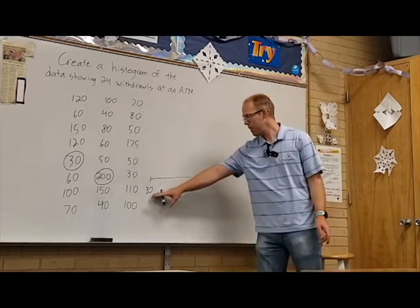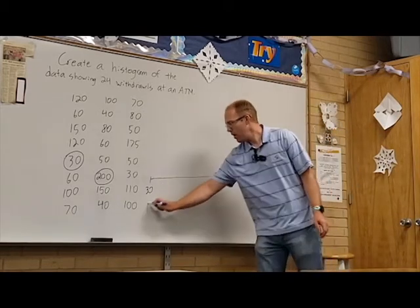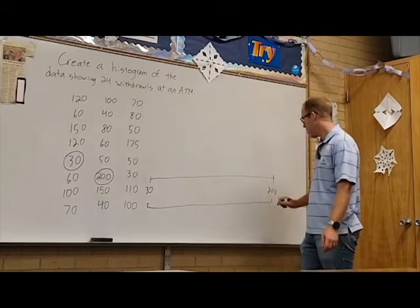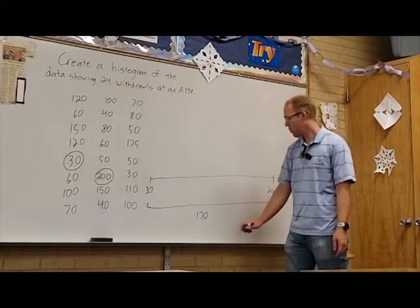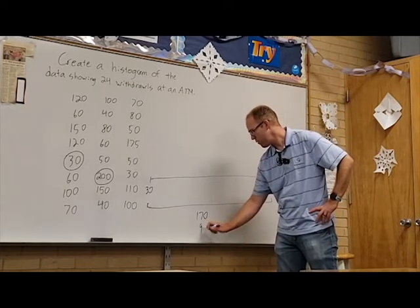Let's see what would happen if we went by 20s. From 30 to 200, the range there is 170. So if I broke that up into 20s, I would have a total of 9 intervals, 170 divided by 20 is 8.5.